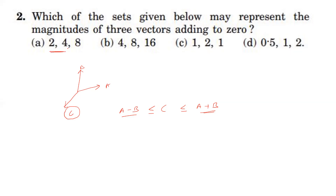In the first option, the maximum of two vectors is 6 but 8 is greater than 6, so it cannot be in equilibrium. Second option: 4 and 8 add to a maximum of 12, but 16 is greater than 12. Third option: maximum is 3, minimum is 1, and the third vector lies between minimum and maximum, so these three vectors can add to zero.